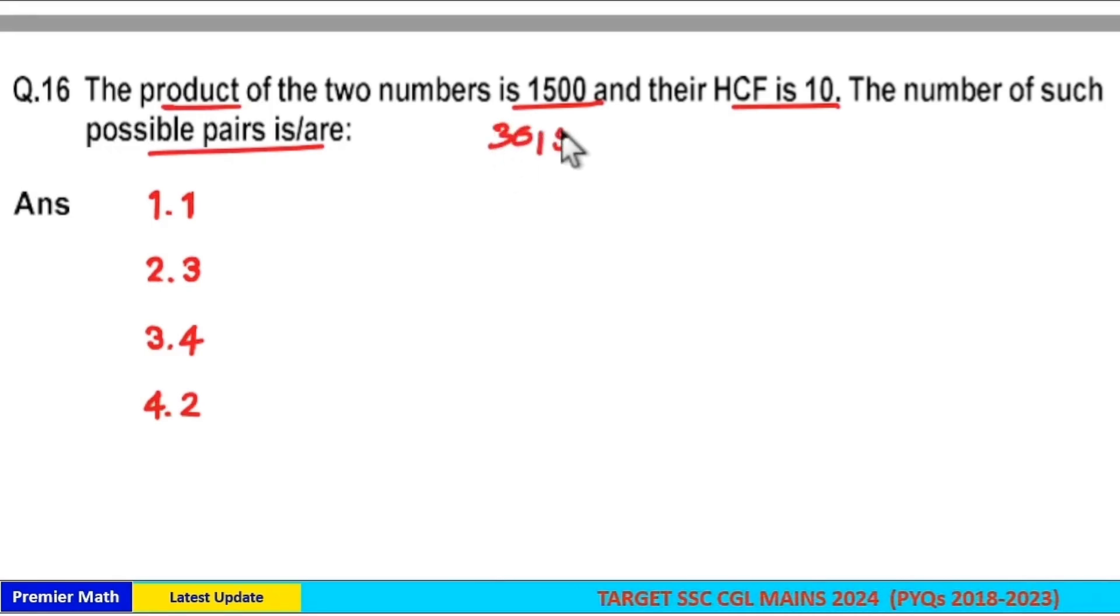Here you can take 30 and 50 as one such pair and 150 and 10 as other such pairs. But you cannot take 15 and 100 because HCF is not 10.